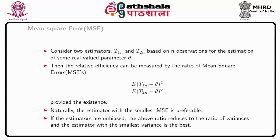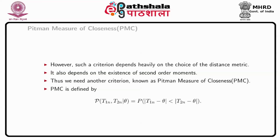If the estimators are unbiased, the above ratio reduces to the ratio of variances or the ratio of precisions. In such a situation, the estimator with the smallest variance is the best. However, such a criterion depends heavily on the choice of the distance measure in addition to the existence of second-order moments.